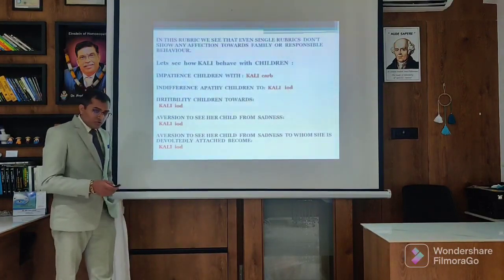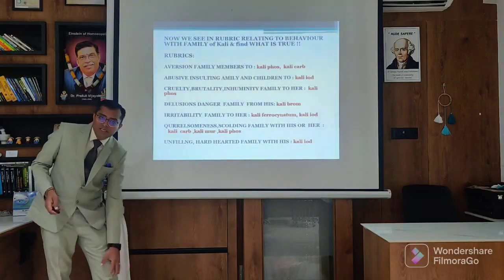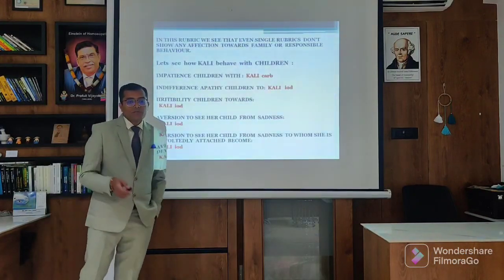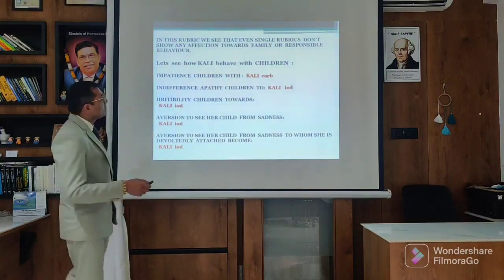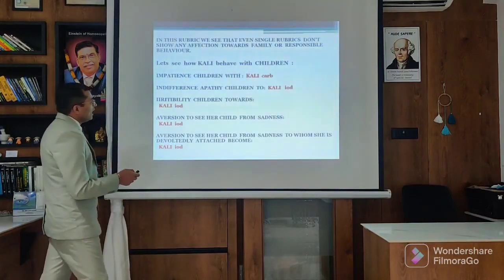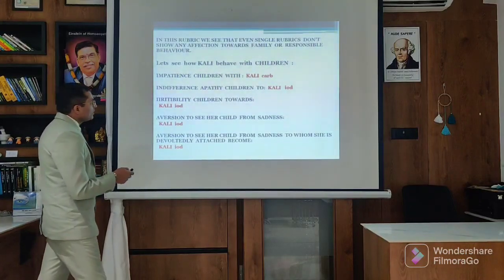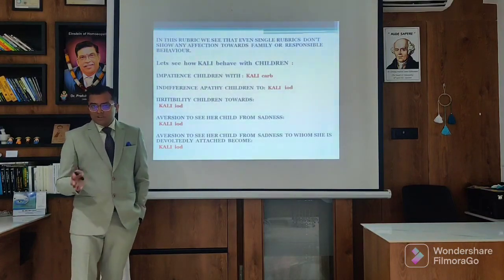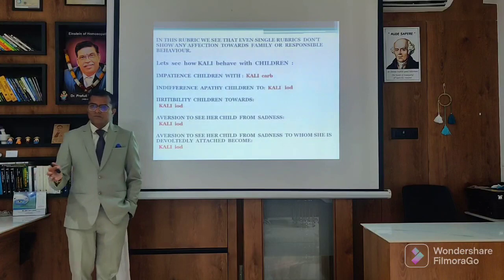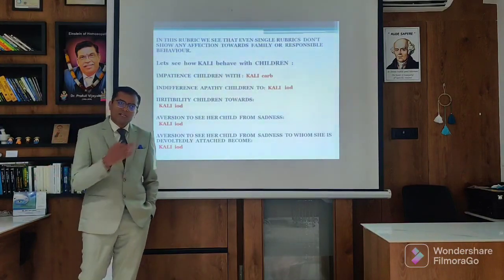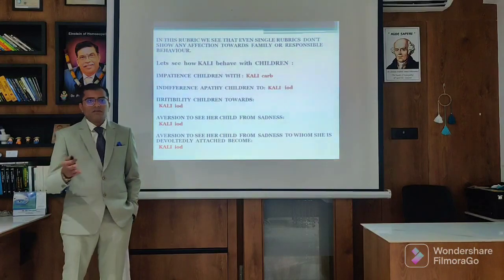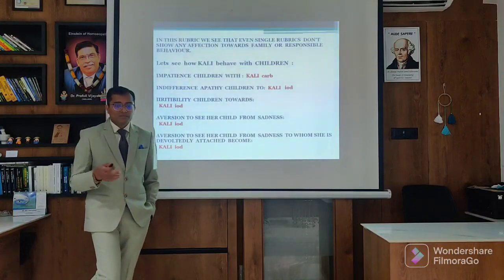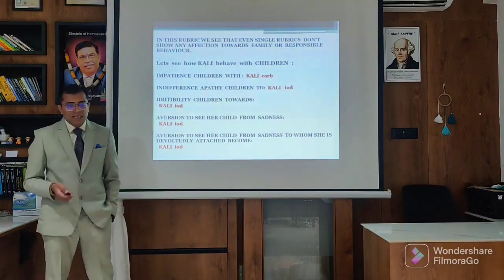There is Kali Iod - most of the Kali Iod suffer from the knee, osteoarthritis of the knee joint. In this rubric we can find that single affections towards the family are responsible. So Kali behaves with the children - there is impatience with children. Kali is very, very impatient with the children. Indifferent, apathetic to children - there is no feeling, like Opium. Aversion to taking the responsibility of the children. Kali is also indifferent to children like Opium. There is irritability towards children in Kali Iod.